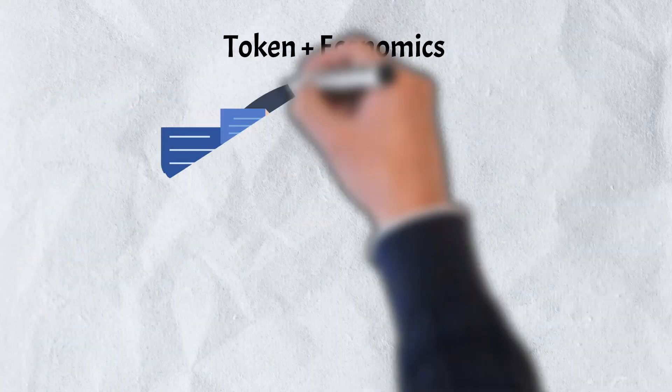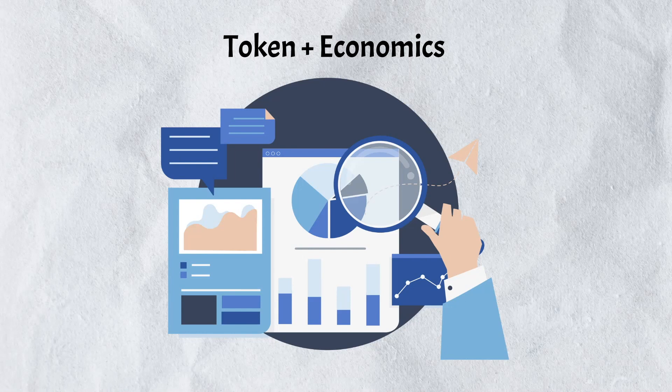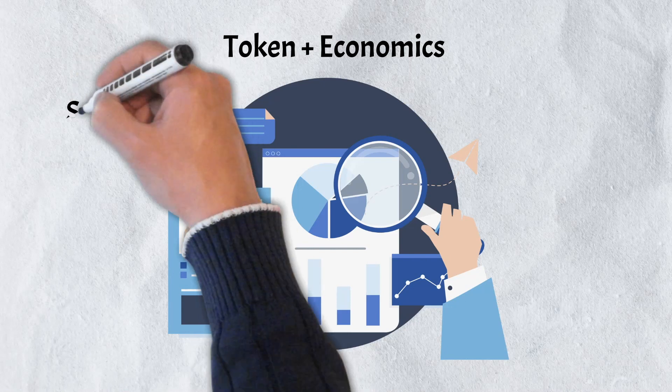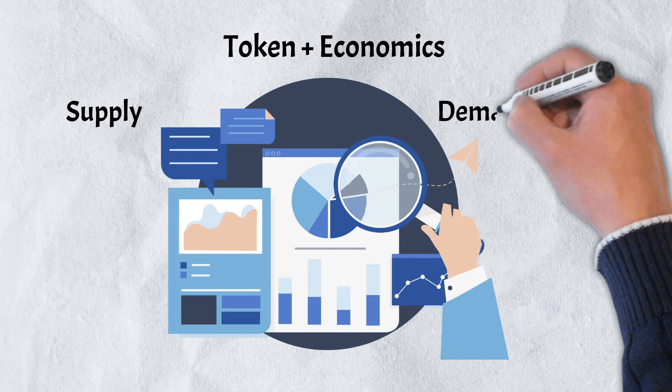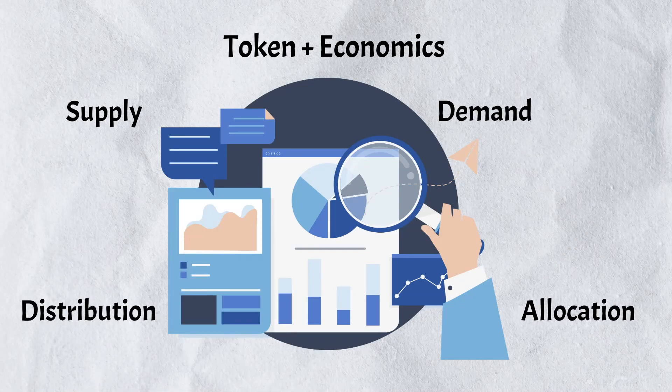Tokenomics is the portmanteau of token and economics and is the study of all the elements that give a token value. While there are many different factors in the tokenomics of a cryptocurrency, some of the most important ones include supply, demand, distribution, and allocation.